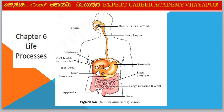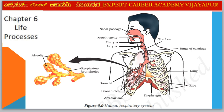Next diagram — Chapter 6: Life Processes. Diagram: Human Alimentary Canal. Parts include: Mouth, Oesophagus, Stomach, Small Intestine, Large Intestine, Appendix, and Anus.